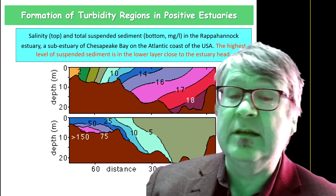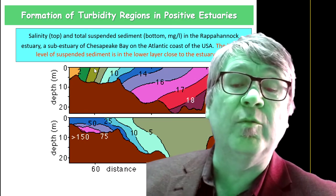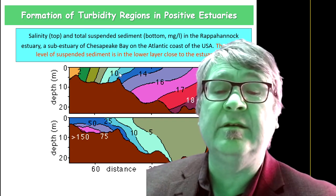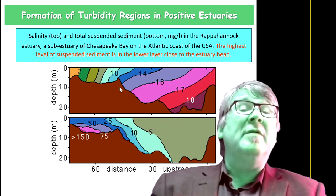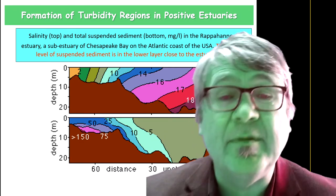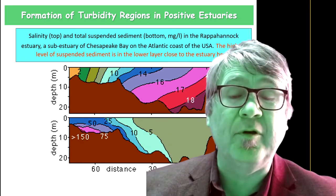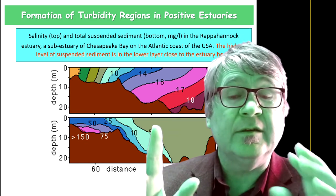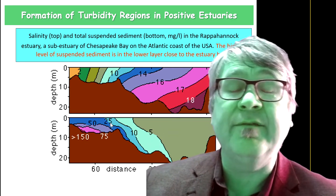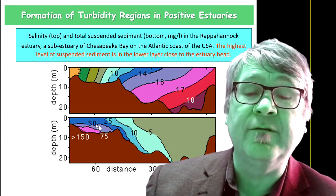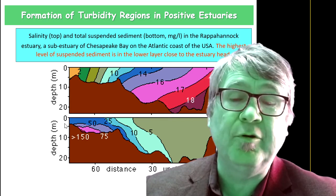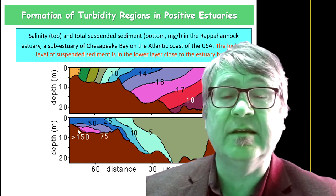This is the salinity distribution. You can see a zone where the salinities are between 2 and 10 salinity units at the bottom layer. It shows you the total suspended sediment in milligrams per liter. Way near the bottom, you can see there are elevated values of more than 100 milligrams per liter suspended sediment.